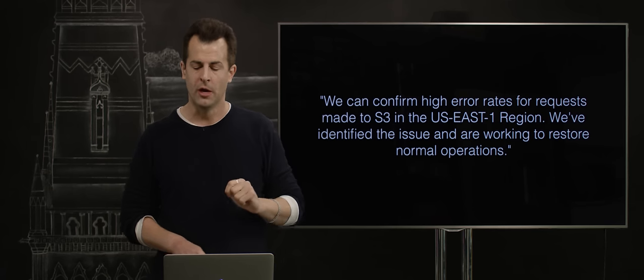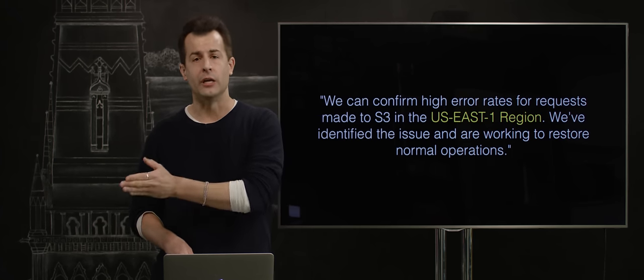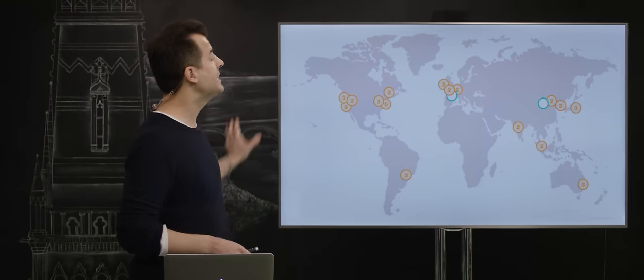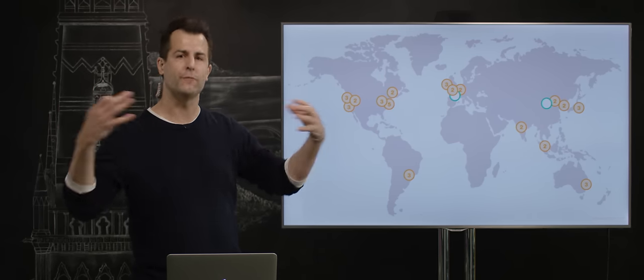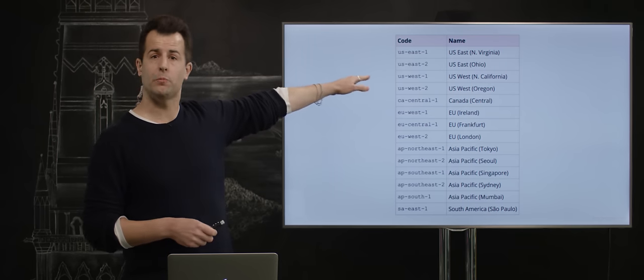We've identified the issue and are working to restore normal operations. Well, what does that mean? Well, US East 1 region is simply one of Amazon's data centers. Like a lot of cloud providers, they have data centers, buildings with lots of servers, lots of hard drives, and more, all over the world. And US East 1 happens to be one of the most popular.